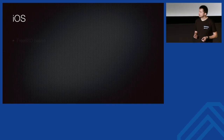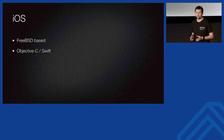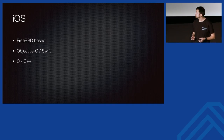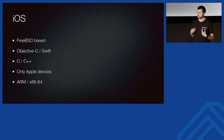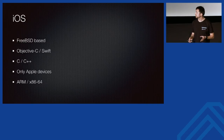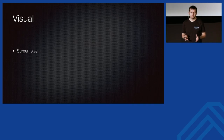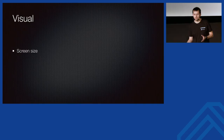Regarding iOS, it's a bit different — it's based on FreeBSD. You write code mostly in Objective-C or Swift, but C and C++ are also supported. You need to provide support only for Apple devices. As developers, this is nice because we know exactly which devices to support, and we have fewer CPU architectures: only ARM and x86_64.